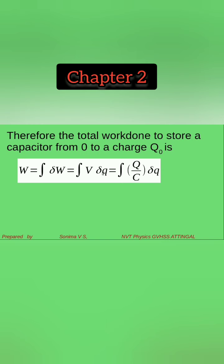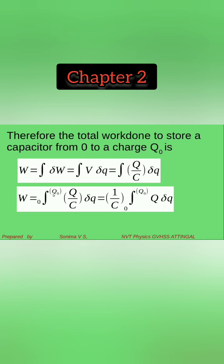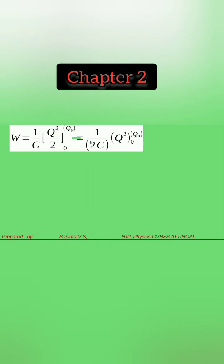W is equal to the integral from 0 to q0 of q by C dq. Since the integral of x dx equals x squared by 2, here the integral gives 1 by C times q squared by 2, evaluated from 0 to q0. This equals 1 by 2C times q0 squared.